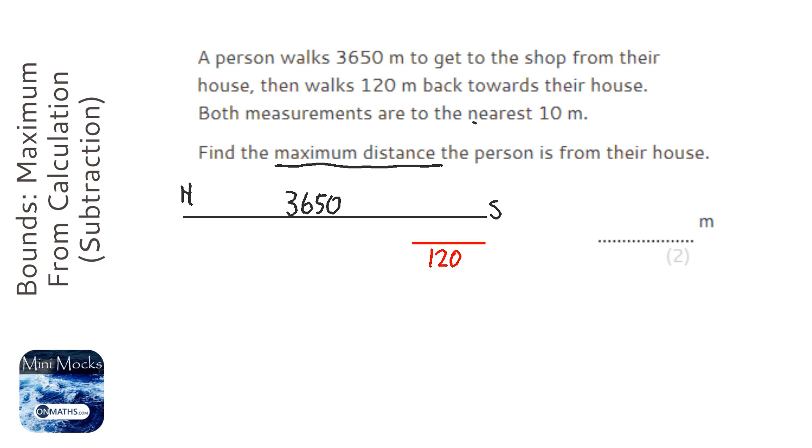But it says each of these is to the nearest 10 meters, therefore we need to find the lower and upper bound of both of them. I'm going to start off with 3650 and we write that in the middle.